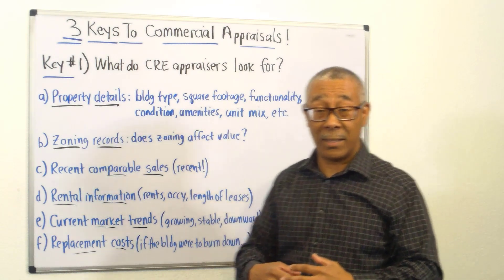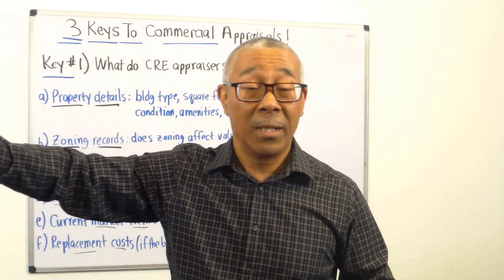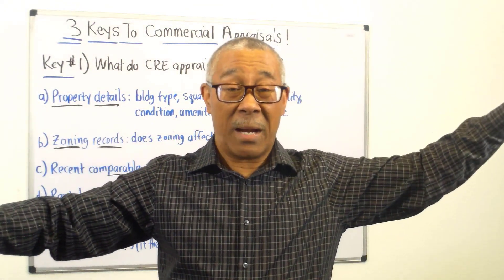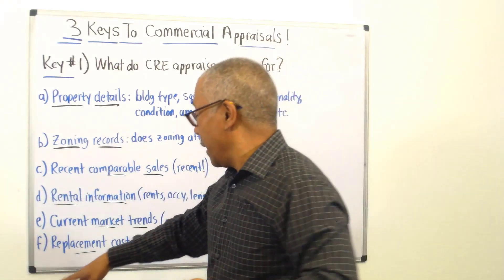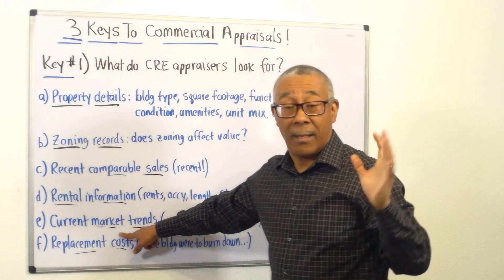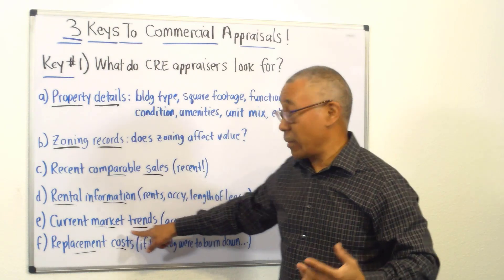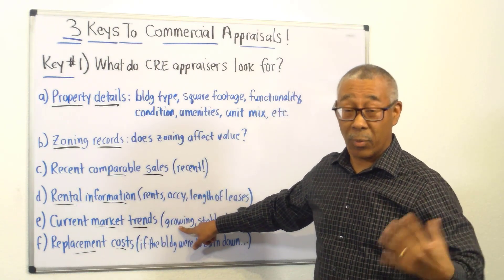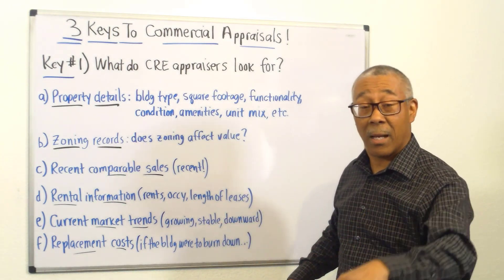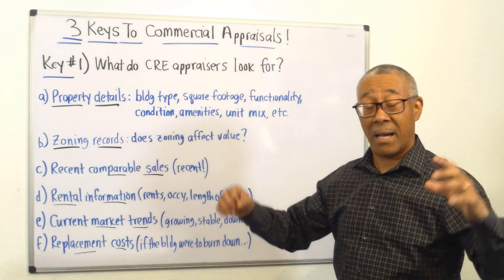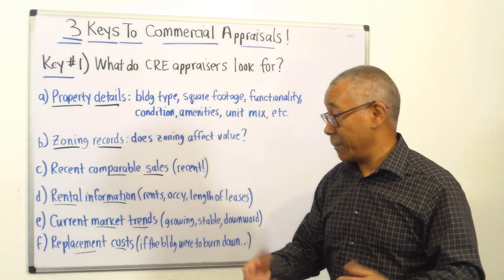Next is length of leases. If you have a shopping center where all the leases expire next year versus another building where leases expire 15 years later, which has more value? The one with longer leases. And then current market trends — the appraiser has to understand if the area is growing and prospering, stable, or on a downward trend with job losses and companies closing. That affects the value of the property.